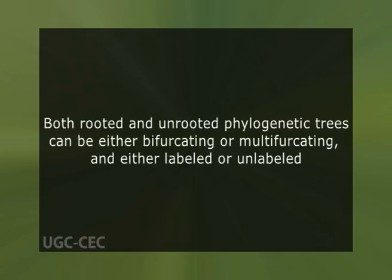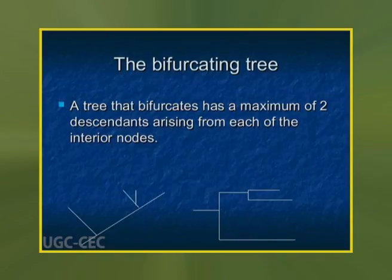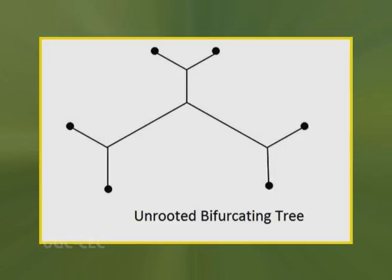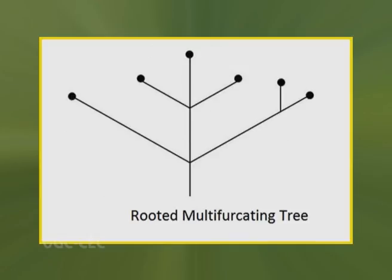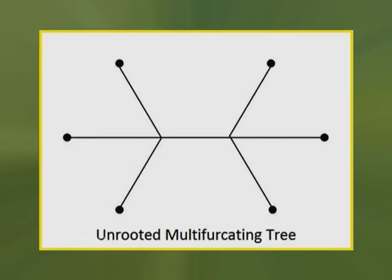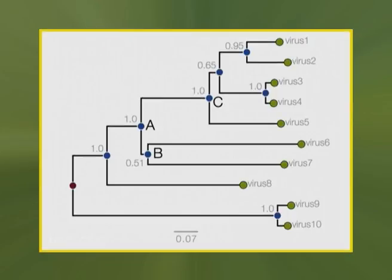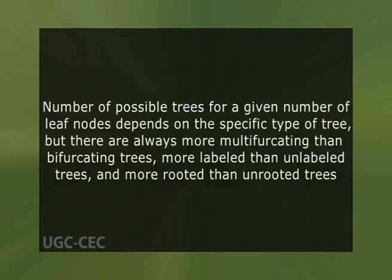Both rooted and unrooted phylogenetic trees can be either bifurcating or multifurcating, and either labelled or unlabelled. A rooted bifurcating tree has exactly two descendants arising from each interior node, and an unrooted bifurcating tree takes the form of an unrooted binary tree with exactly three neighbours at each internal node. A rooted multifurcating tree may have more than two children at some nodes. A labelled tree has specific values assigned to its leaves, while an unlabelled tree is defined as a topology only. There are always more multifurcating than bifurcating trees, more labelled than unlabelled trees, and more rooted than unrooted trees.